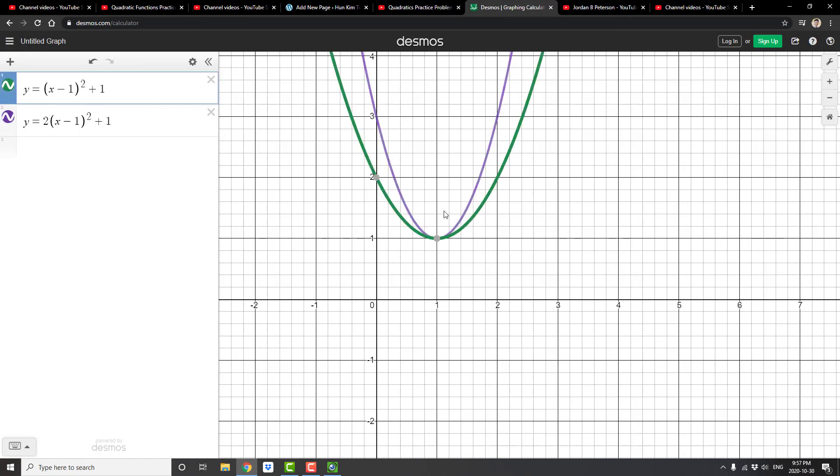So what used to be the point 1, 1, you go 1 right, you go 1 up. But for the purple graph, you go 1 right, you end up going 2 units up.